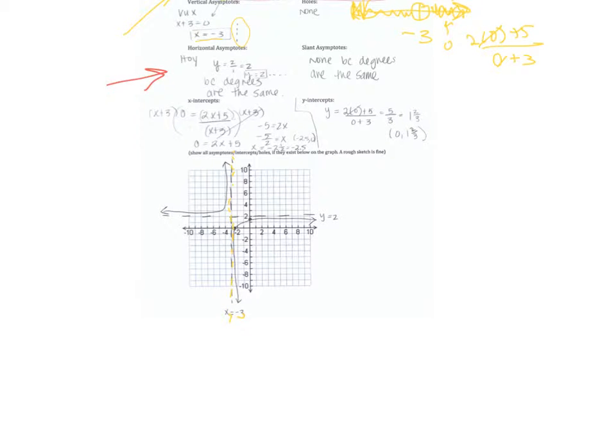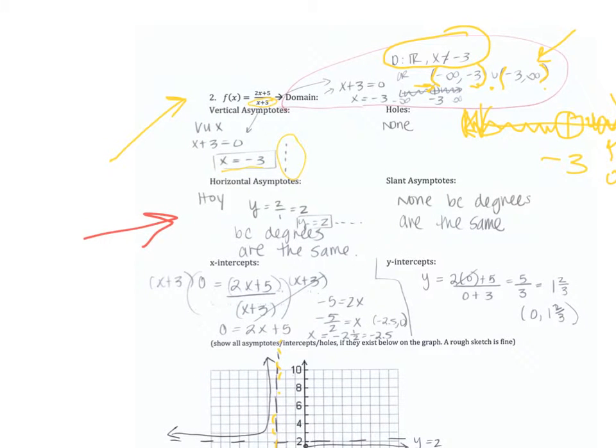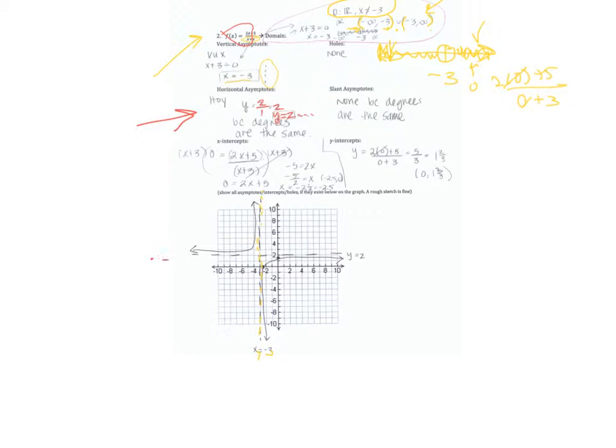For a horizontal asymptote, remember there's three different kinds. You can have none, 0, or leading coefficient over leading coefficient. Because the degrees are the same, it's degree 1 over degree 1, you have the front number, leading coefficient over leading coefficient. So, 2 over 1 is 2, so y equals 2 is going to be the horizontal asymptote, which we see right here. There's no slant asymptotes, because the degree on top is not larger than the degree on bottom, one larger than the bottom.